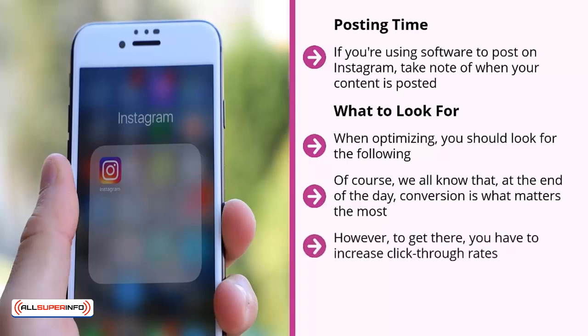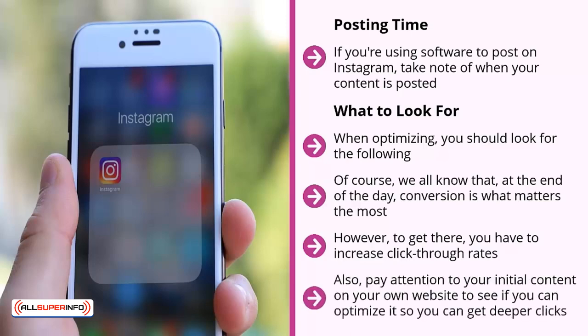However, to get there, you have to increase click-through rates. You also have to see if the page that you are presenting to people you draw from Instagram holds their attention for a longer time — you can keep optimizing that page to maximize dwell time. Pay attention to your initial content on your own website to see if you can optimize it so you can get deeper clicks. The more internal pages a person views, the more interested that person is in whatever it is you have to offer. Ultimately, if you take care of these on an element-by-element basis, you can increase conversion rates.